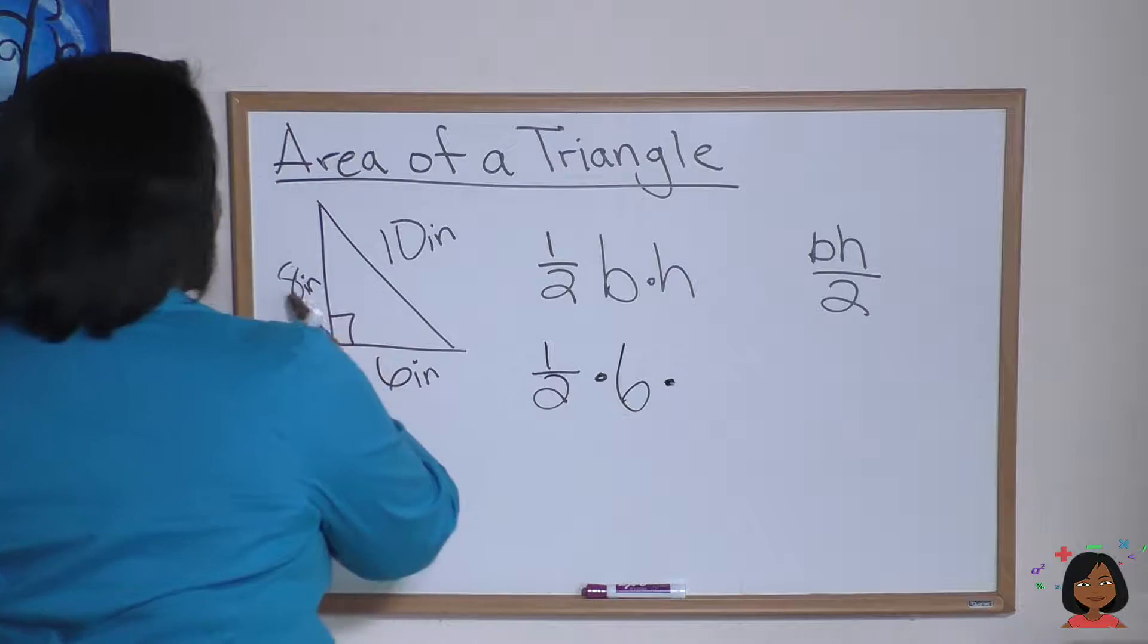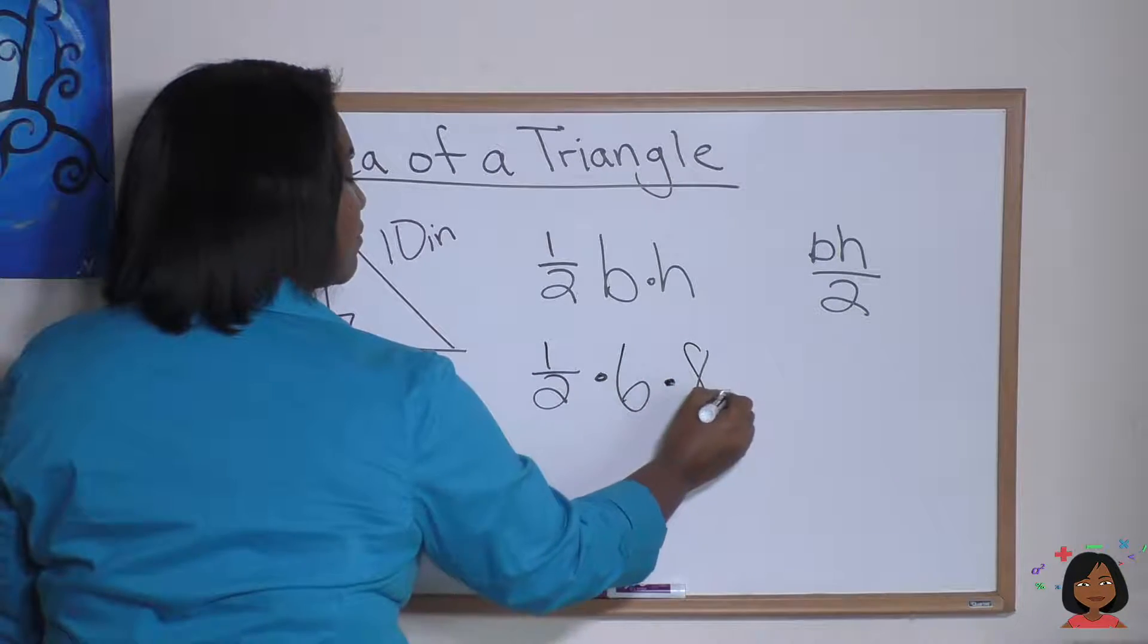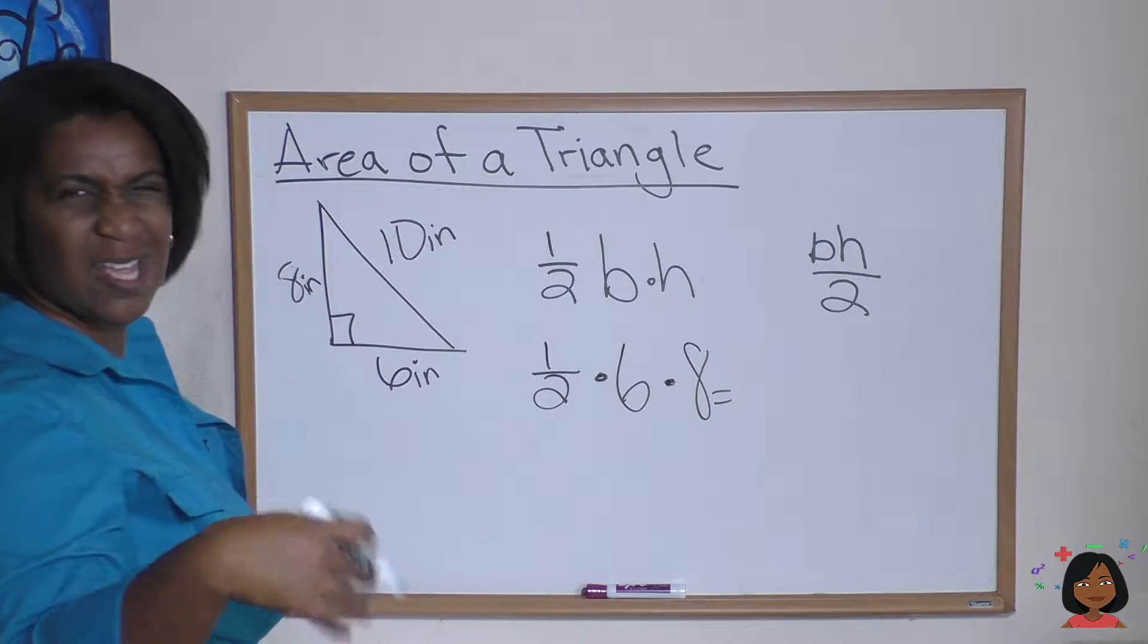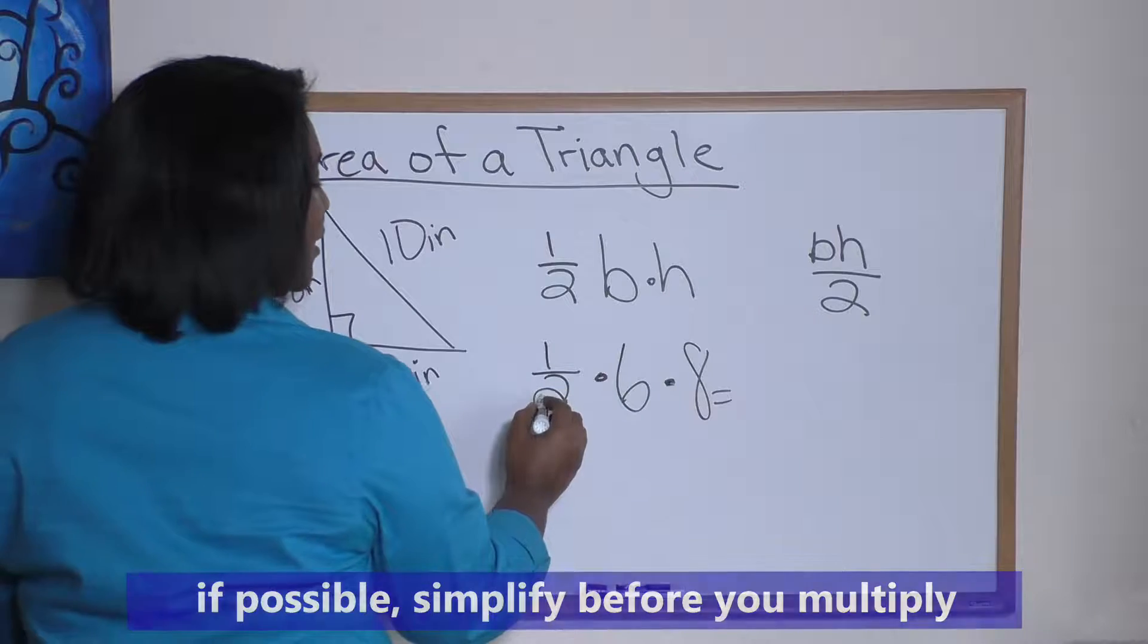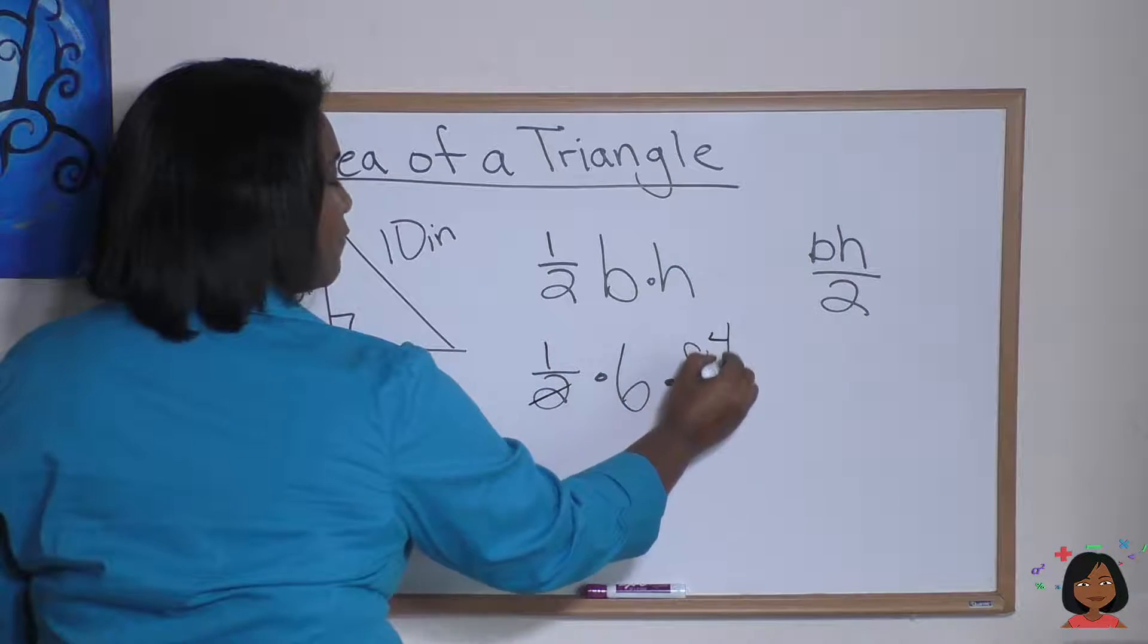And this time, instead of multiplying everything across, I'm going to simplify before I multiply. Makes life a little easier. Let's do two into eight and I'm going to get a four.